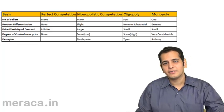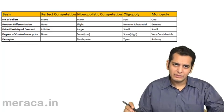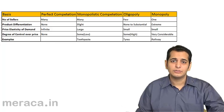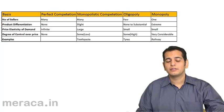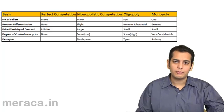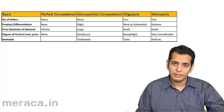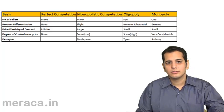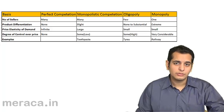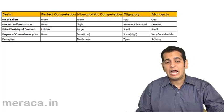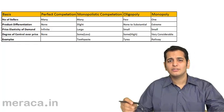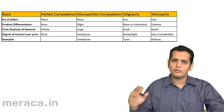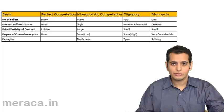Both buyers and sellers perfectly know what the market conditions are — what is the product in the market, what is the price, which seller is selling at which price, what services he is offering, what bargains he is giving, how many sellers and buyers there are. Both have perfect knowledge about the market.